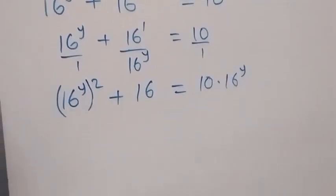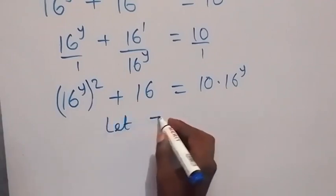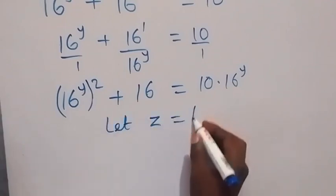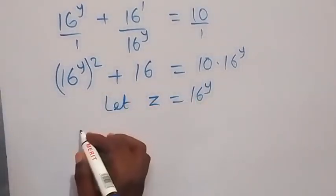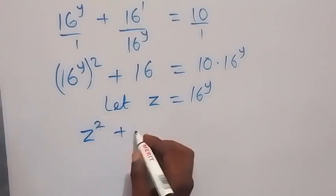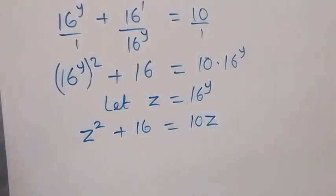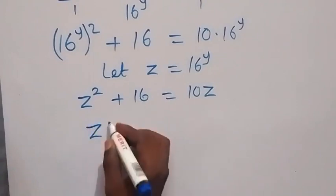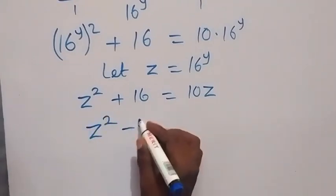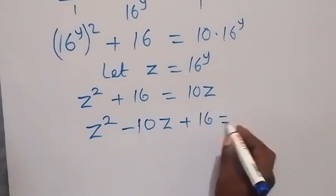We can use a letter to represent 16 raised to power y. Let z equal 16 raised to power y. Then we can write z squared plus 16 equals 10z. Bringing everything to one side forms the equation: z squared minus 10z plus 16 equals 0.